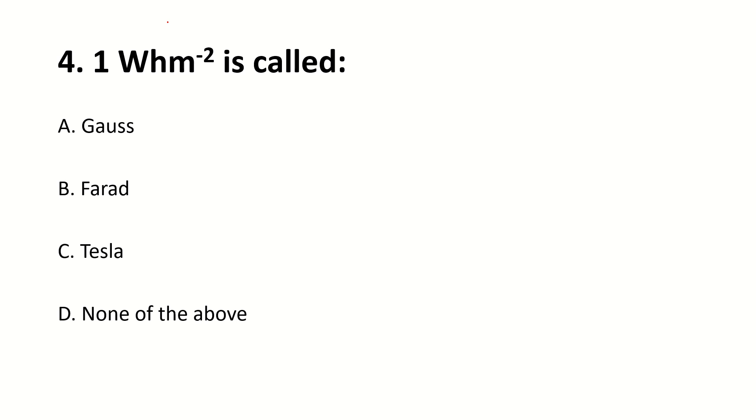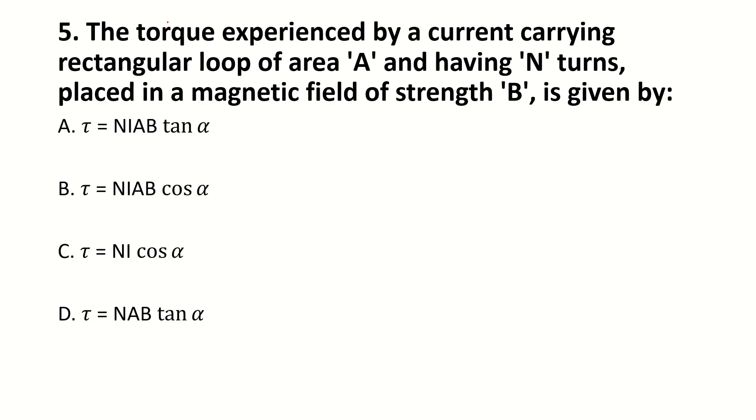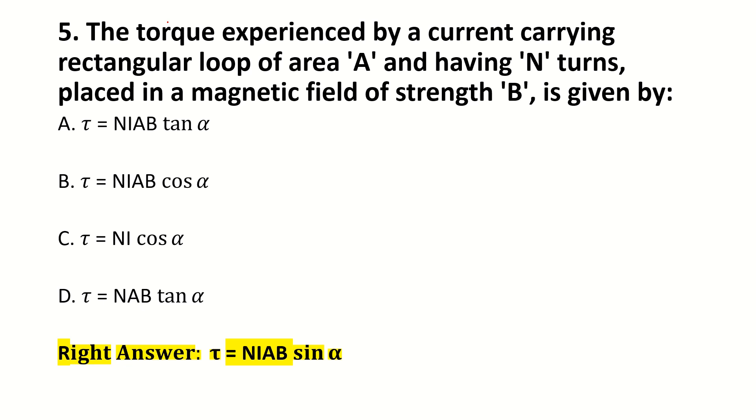1 WHM when minus 2 is called dash. Right answer is Tesla. The torque experienced by a current carrying rectangular loop of area A having n turns placed in a magnetic field of strength B is given by dash. Right answer is τ = NIAB sin α. If you can mark it in your paper, you can mark it, but right answer is this. I have searched every place, this right answer is this.